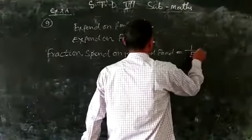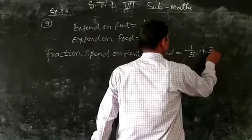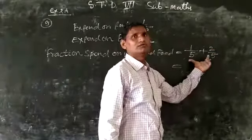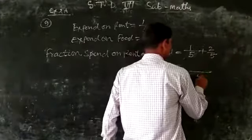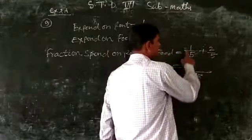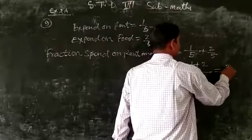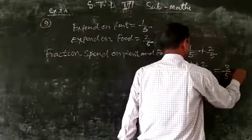1 upon 5 plus 2 upon 5. Here we see that the denominators are the same, 5. Keeping the denominator and adding the numerators, 1 plus 2, we get 3 upon 5. Answer.